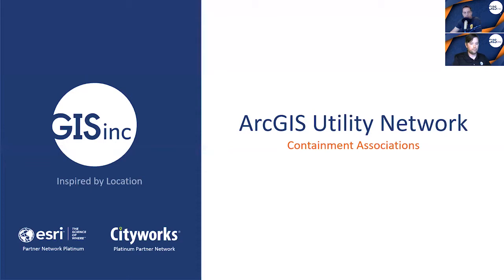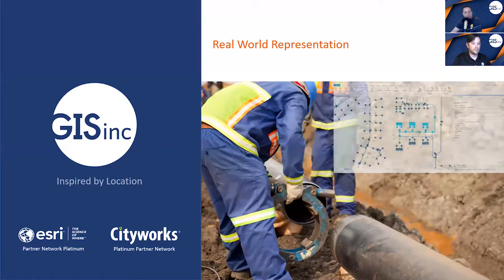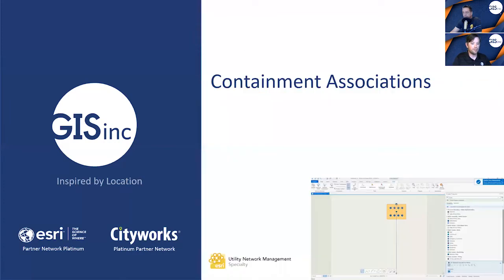And today, we want to explore another important capability found in this technology, which is the concept of containment association. So Emerson, can you explain to us why containments play a critical role in the utility network, specifically for the water distribution sector? Sure, Steve. Well, simply put, this capability gives users of the water system the ability to enable the modeling of assemblies and complex devices in your network, while also controlling map clutter.